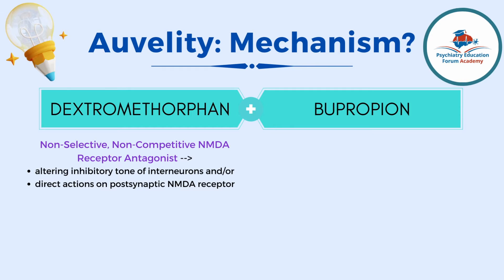One major theory is that in major depressive disorder, glutamate is reduced in the dorsolateral prefrontal cortex and some other areas of the prefrontal cortex, so we have to increase glutamate there. One of the ways we can do that is by altering the inhibitory tone of interneurons. There is a pre-synaptic neuron and a post-synaptic neuron that communicate through a synapse by releasing neurotransmitters. There is also a GABA interneuron on the pre-synaptic neuron that has NMDA receptors on it. By antagonizing those NMDA receptors on the interneuron, these medicines alter the inhibitory tone of the interneuron.